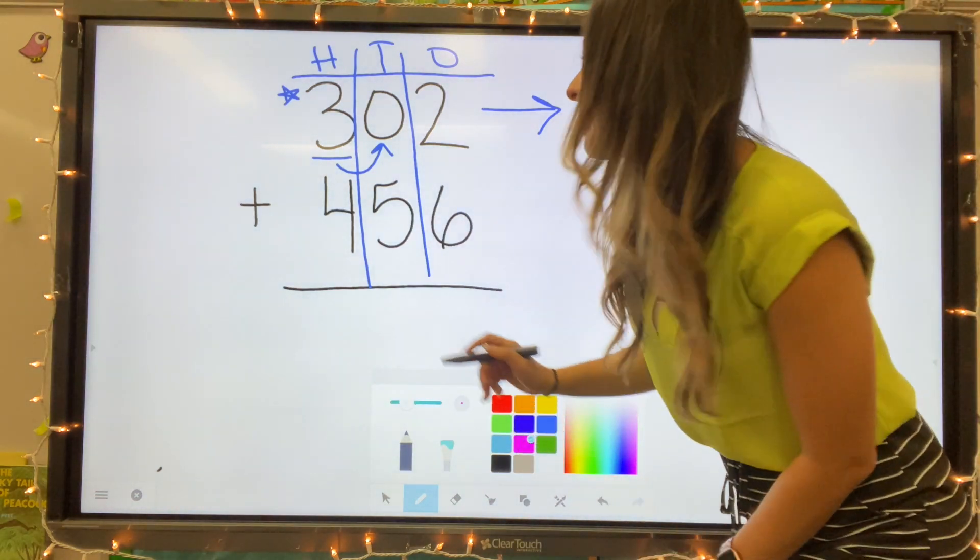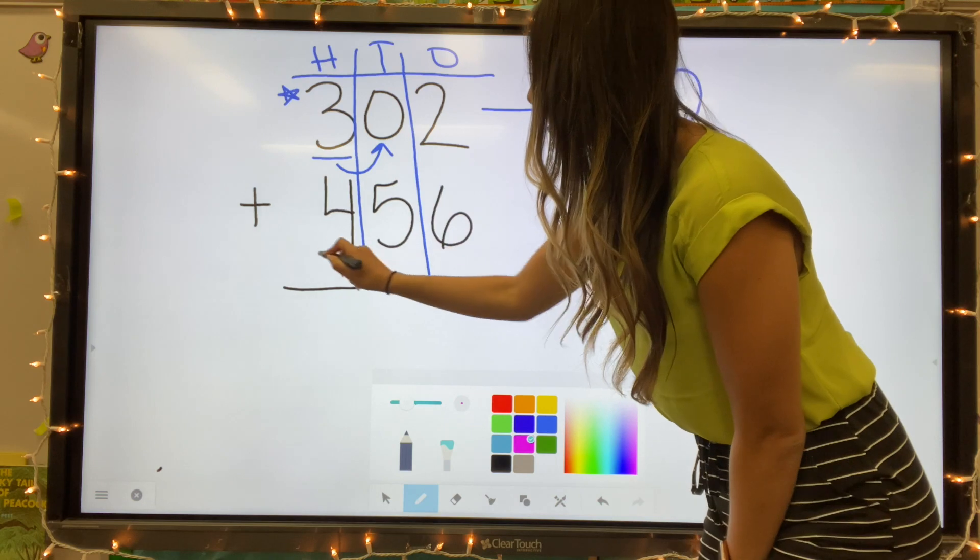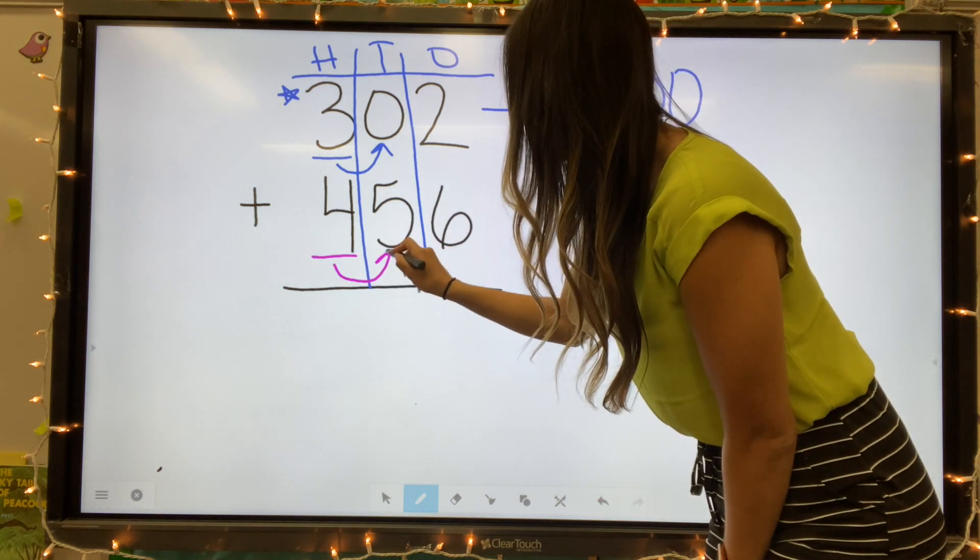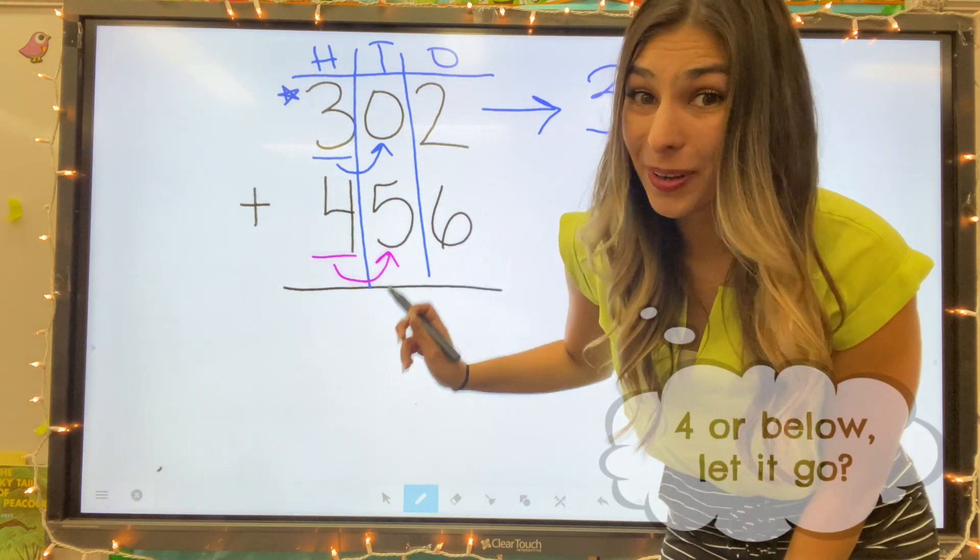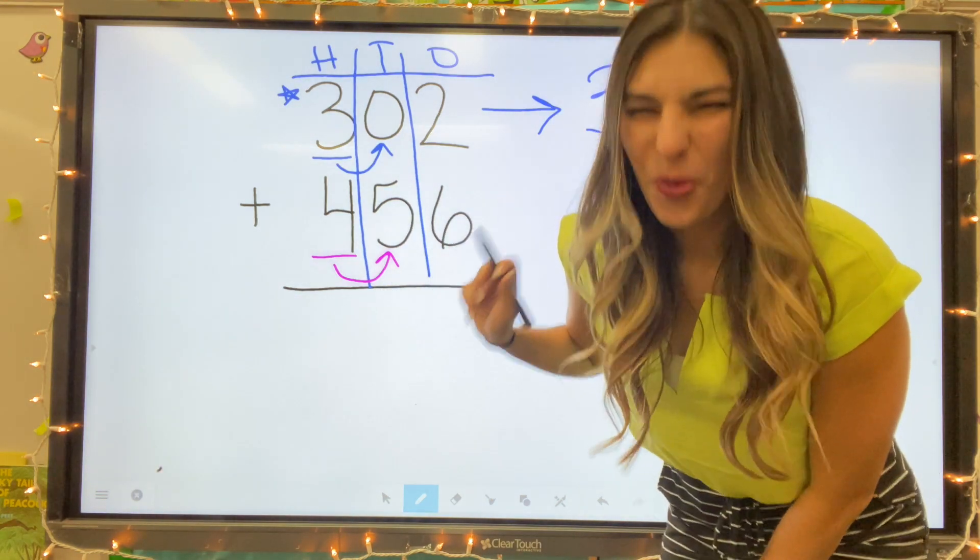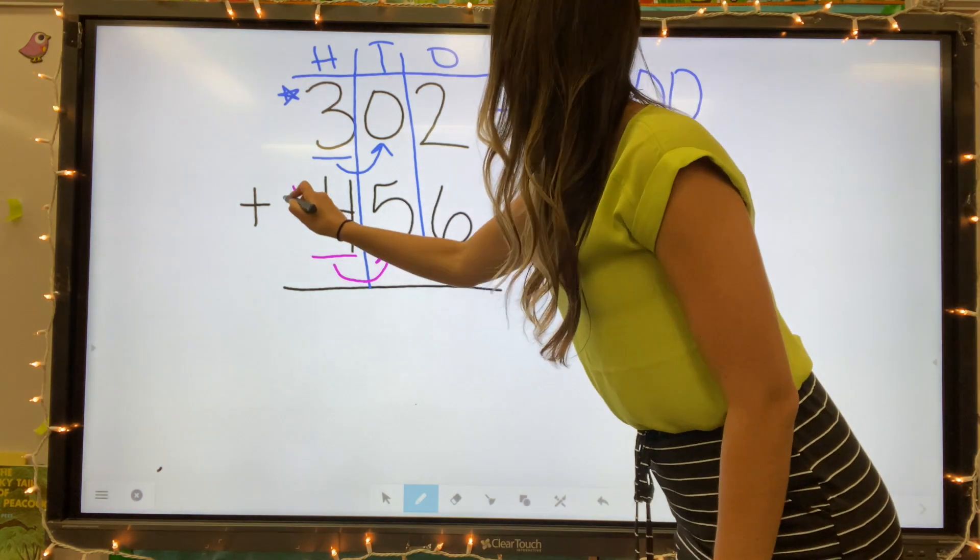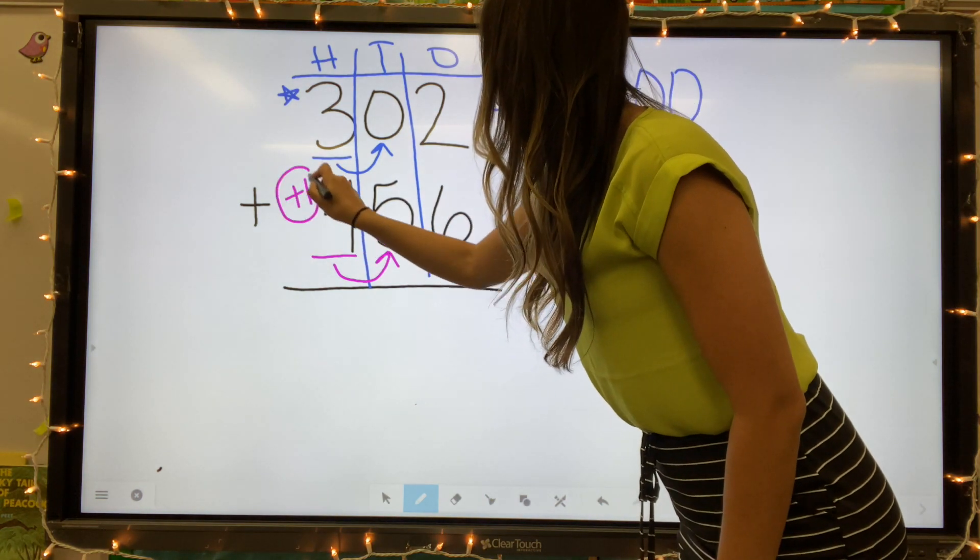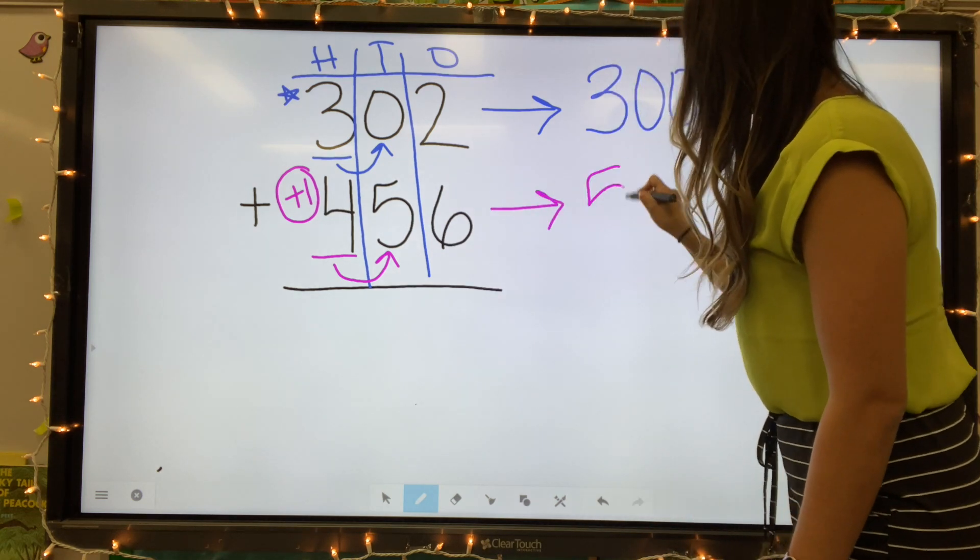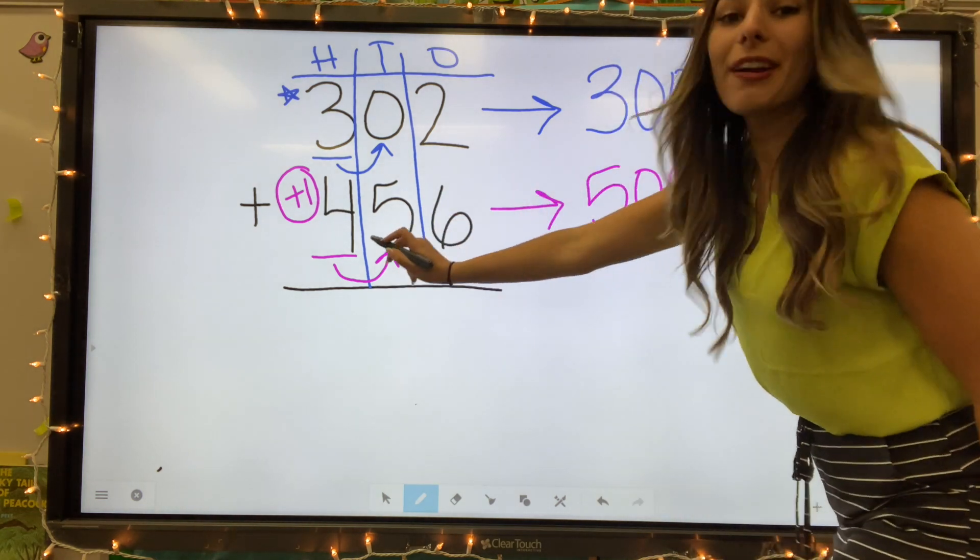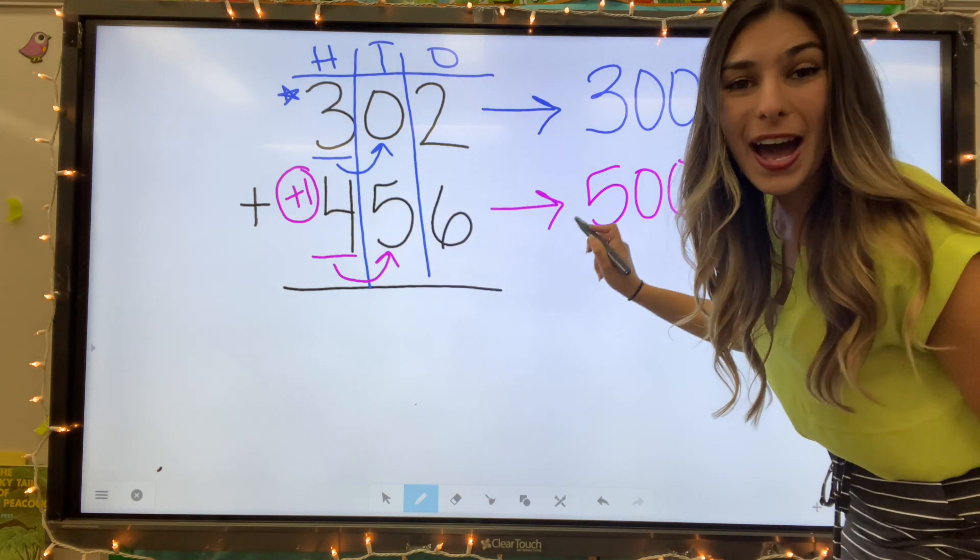Let's move on to our next number. We have 456. My place is in the hundreds. I look next door at that five and I ask myself, should we add one more or let it go? We're going to add one more. That five is too big. We're going to add one more to our tens. So four plus one equals five. We're going to make it a hundred. So we rounded 456 to 500.